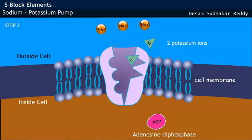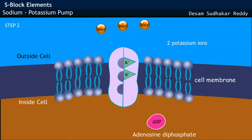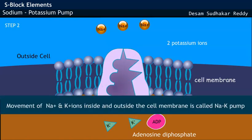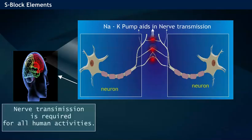Now two potassium ions from outside bind to the protein molecule, which changes shape and releases two potassium ions inside the cell. This movement of sodium and potassium ions is called the sodium-potassium pump, which develops potential difference and helps in nerve transmission.